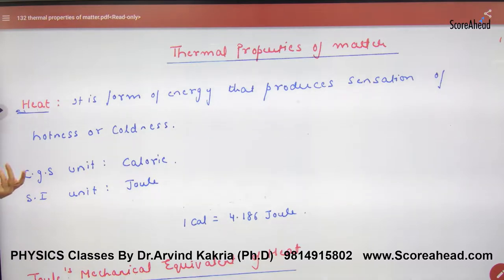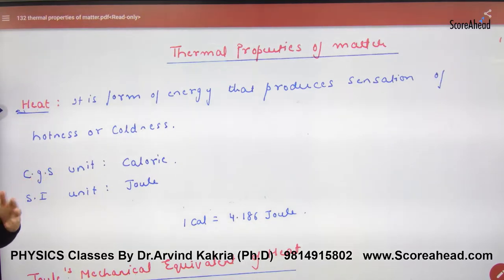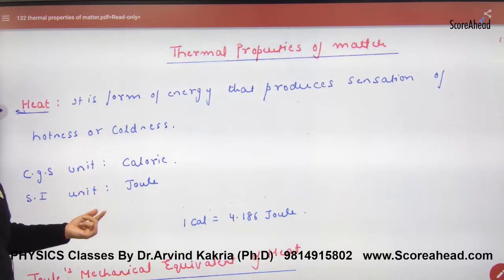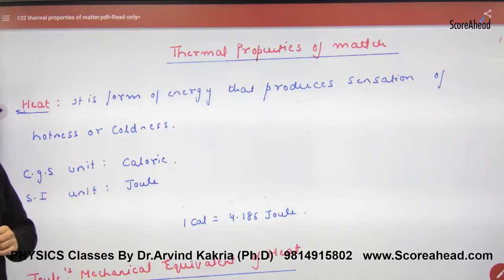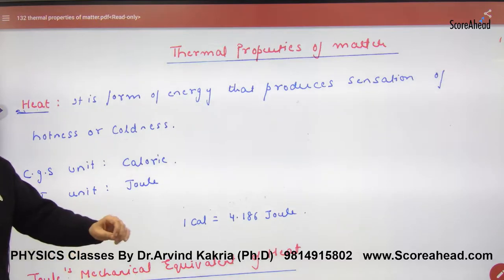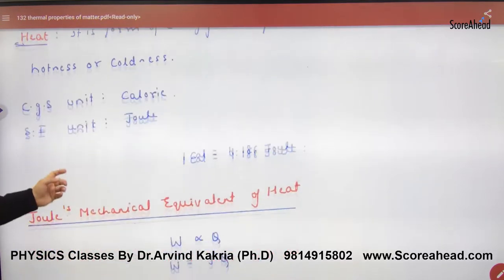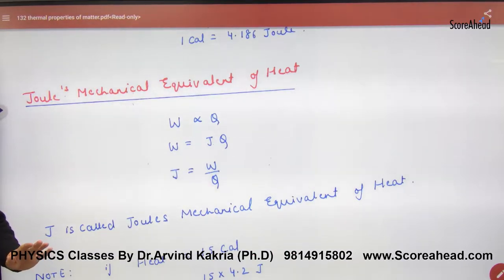What is heat? It is a form of energy that produces the sensation of hotness or coldness. Heat can be measured in CGS units as calories, and in SI units as Joules. One calorie equals 4.186 or approximately 4.2 Joules — remember to keep this.